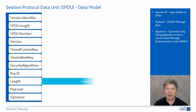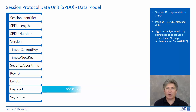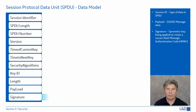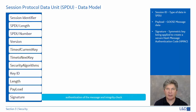The length field is the length of the payload data. The payload is the GOOSE message, including the simulation bit, the application ID, and so on. And finally, the signature — this is a secure HMAC, or Hash Message Authentication Code, which is like a CRC, a cyclic redundancy check, used for authentication and integrity checks.